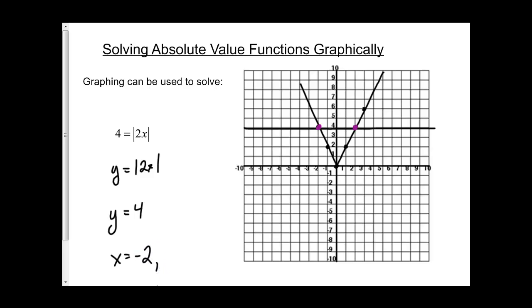The x value for this point is negative 2, so one solution is x equals negative 2. The other intersection is at x equals positive 2. My solutions are x equals negative 2 and x equals positive 2.